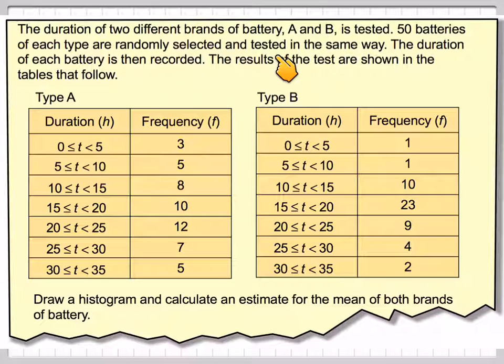50 batteries of each type are randomly selected and tested in the same way. The duration of each battery is then recorded. The results of the test are shown in the tables that follow. There's Table A, Table B.